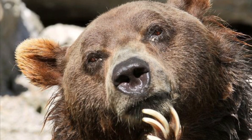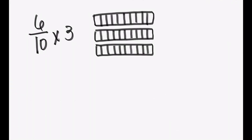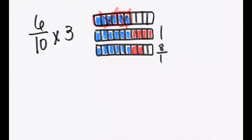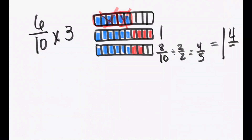Let's take a look at this problem in a picture. We have 6 tenths 3 times, so we need to make sure that each one is colored in 6 times. Now we're going to try to make wholes. We're going to take these top 4 to fill up one to make a whole, and take the other 2 to fill up the bottom one. We notice we can make 1 whole, but on the bottom we can only make 8 tenths. We can simplify by dividing the top and the bottom by 2 and get 4 fifths. So our answer is 1 and 4 fifths.